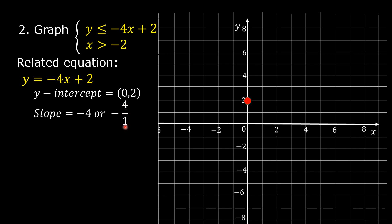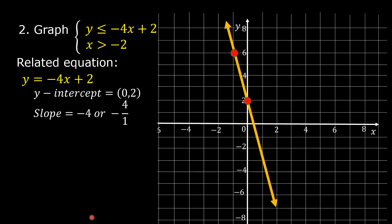We know that slope is rise over run. This is negative 4 over 1, so we are going to rise or move upward 4 units. And since the slope is negative, we are going to move horizontally 1 unit to the left. 1, 2, 3, 4, and then 1 unit to the left. This is the point. Since the symbol of inequality in the first linear inequality is less than or equal to, then we are going to draw a solid line through the two points. This is the graph of y is equal to negative 4x plus 2.